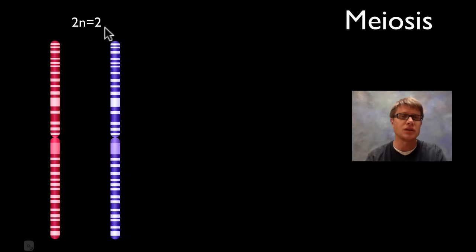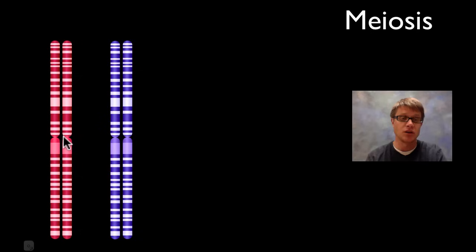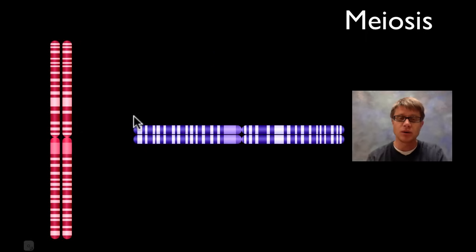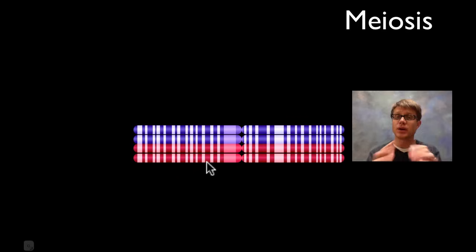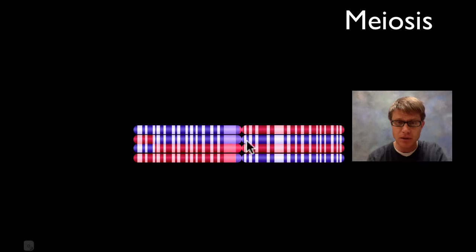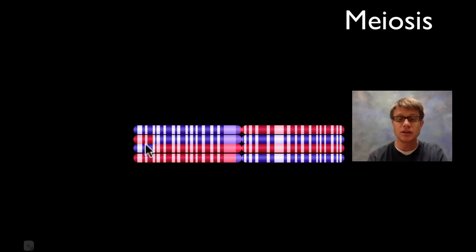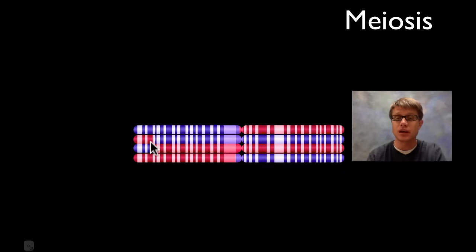Now we're going to go through meiosis. Meiosis starts the exact same way — a diploid cell where 2n equals 2, one chromosome from mom, one from dad. We copy those chromosomes during the S phase of interphase, making exact copies. But now it gets a little weird. These two homologous chromosomes come together and meet in the middle. During prophase they wind around each other so tight that crossing over happens — little bits of the female chromosome switch places with the male chromosome. Since they're the same length and have the same genes, although possibly different alleles, it's easy for them to bond together and form new chromosomes.